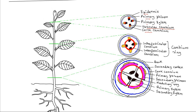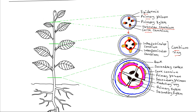Secondary growth begins with the lateral division of the vascular cambium to form a continuous cambium ring. In most plants, secondary growth begins two years after formation, and the first change that takes place is the formation of this continuous cambium ring.